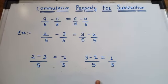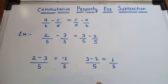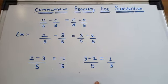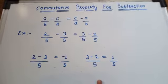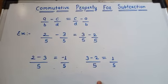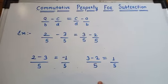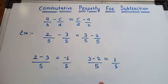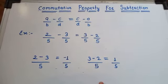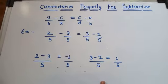Hello, so today we are going to learn about commutative property for subtraction. According to commutative property, a by b minus c by d is equal to c by d minus a by b.